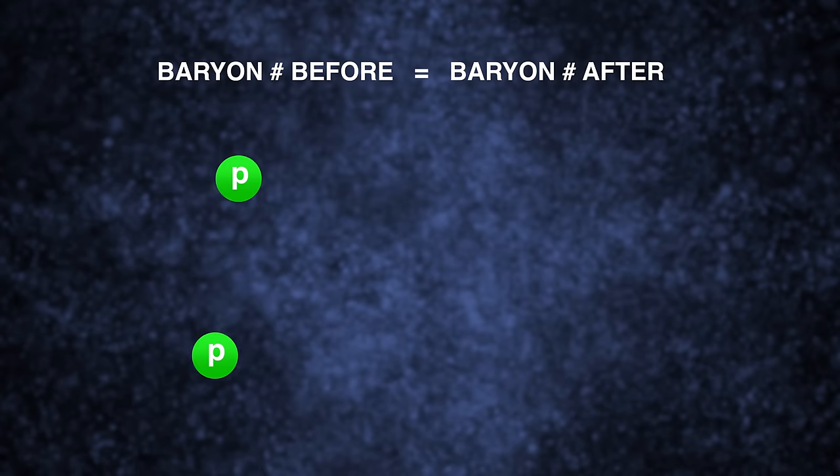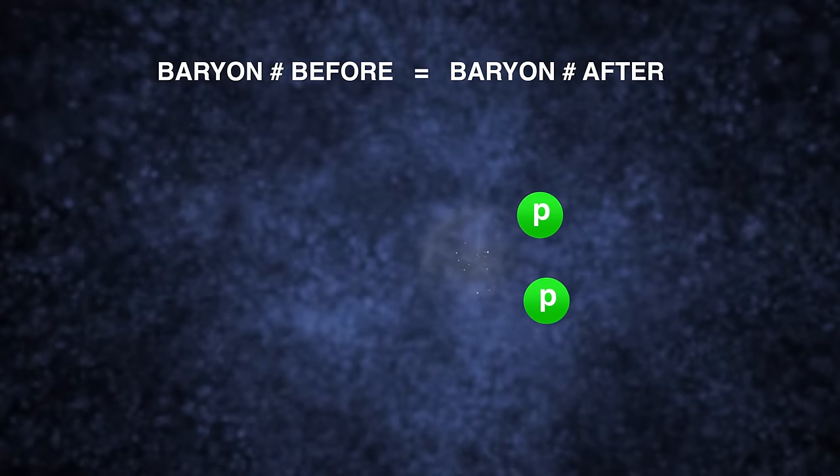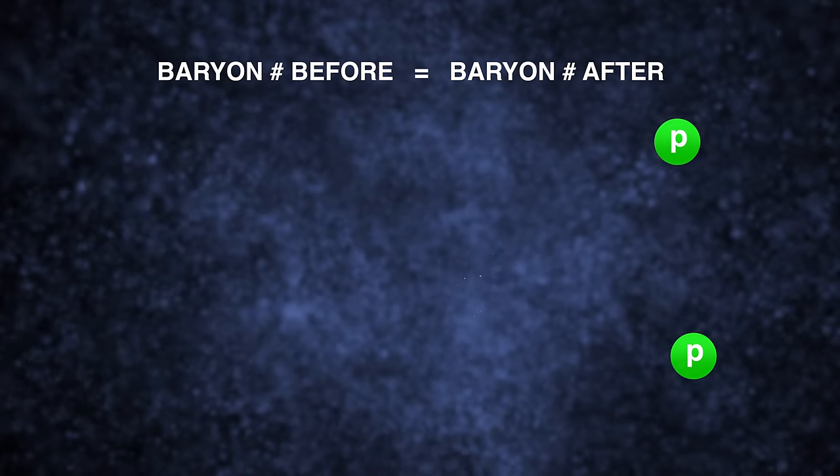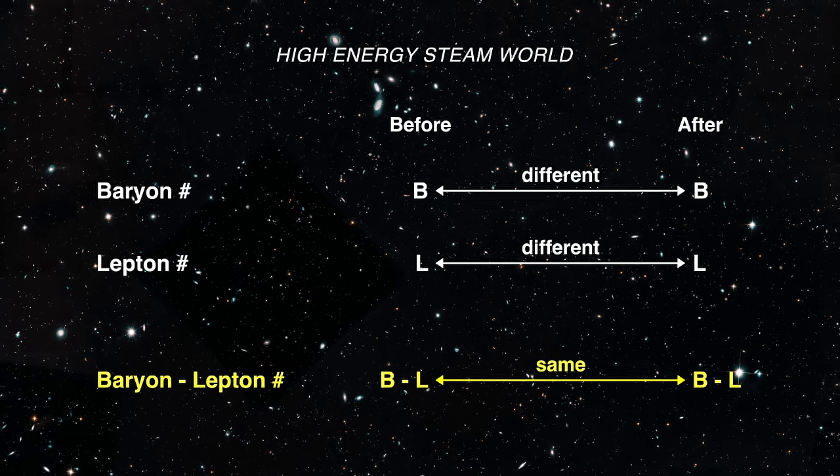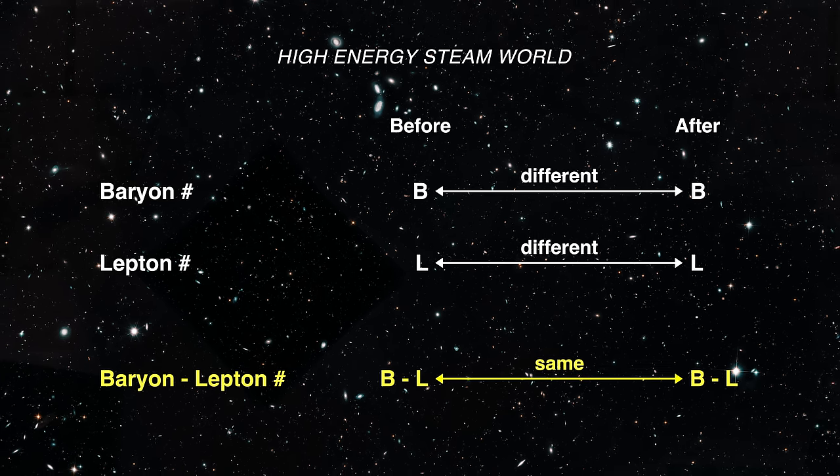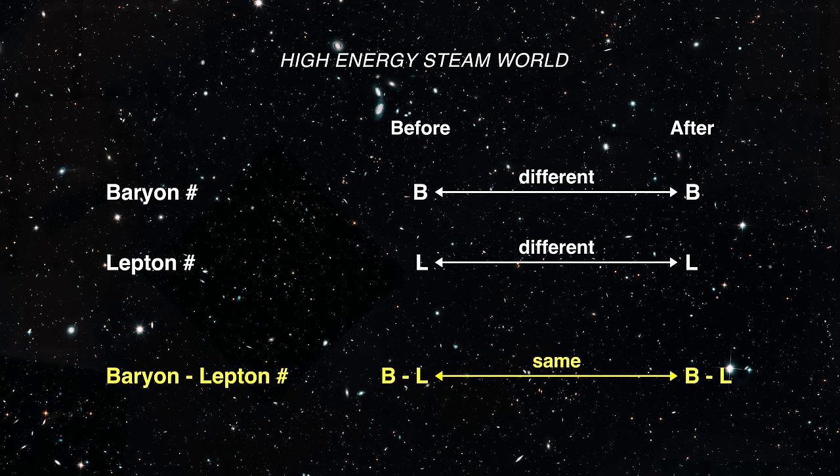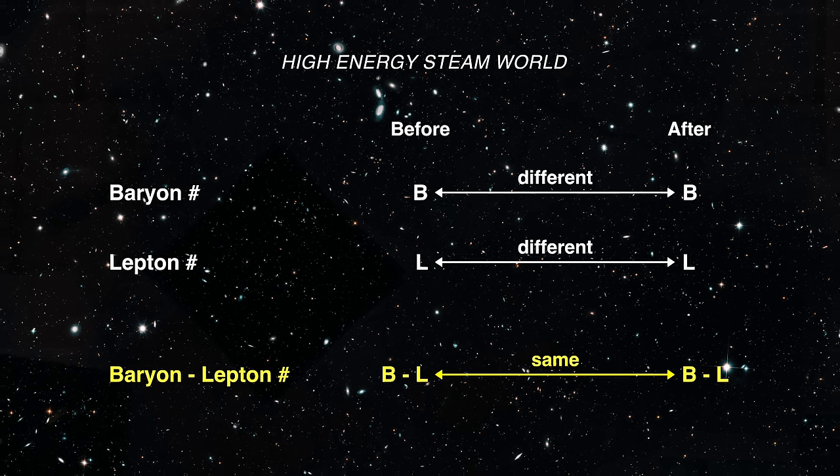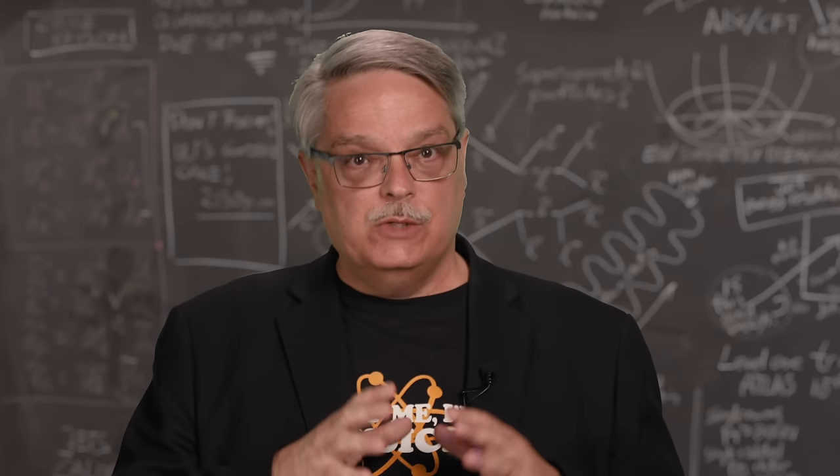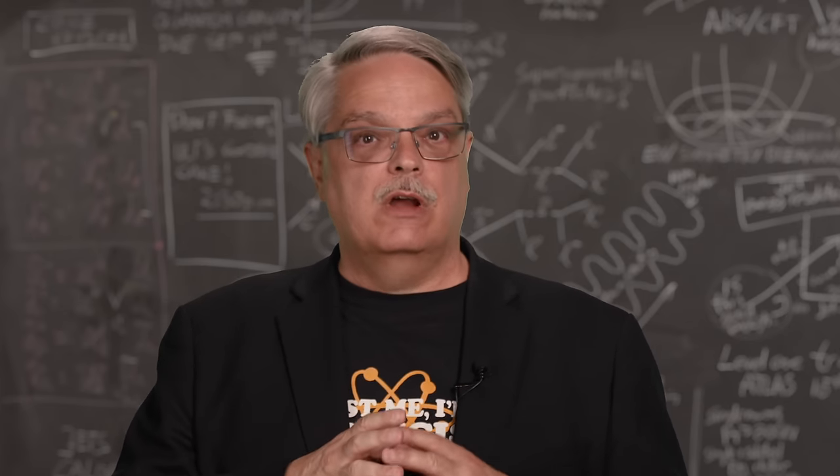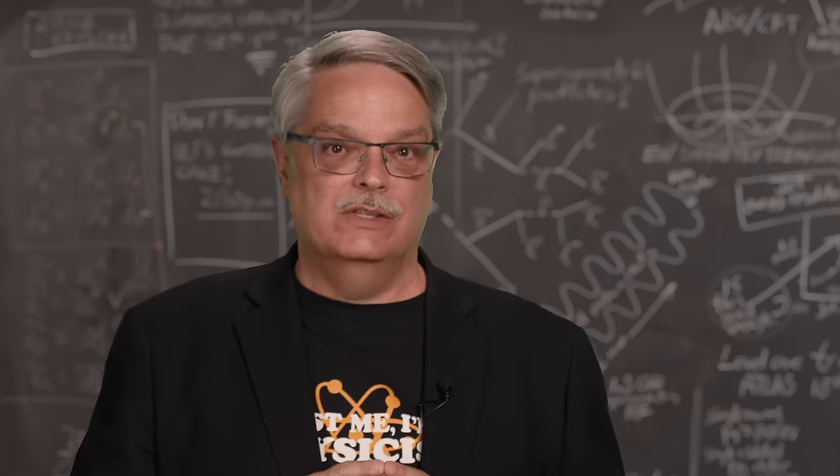But in the steam world, neither baryon nor lepton number is conserved. What is conserved is the surprising quantity of baryon number minus lepton number, or B minus L for short. So this leads to an unexpected consequence. The sphaleron process can convert antimatter leptons into matter baryons. Let's look at this a little more.